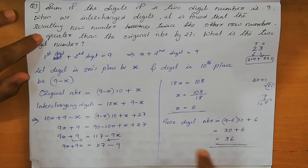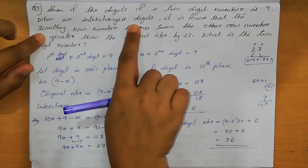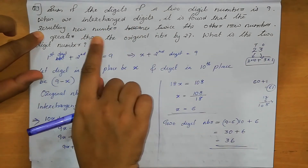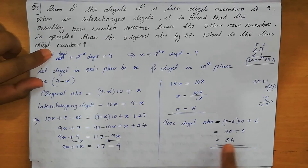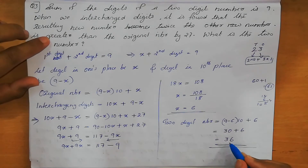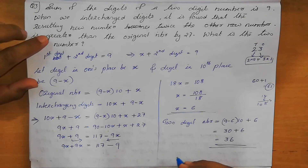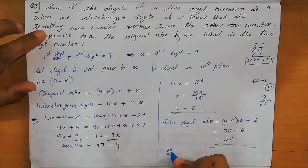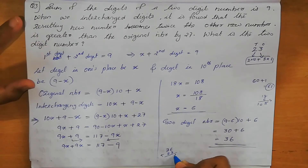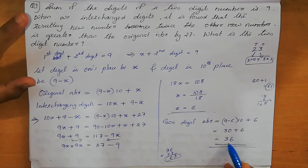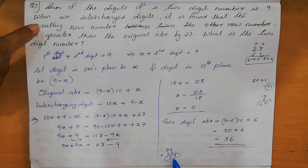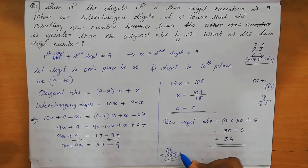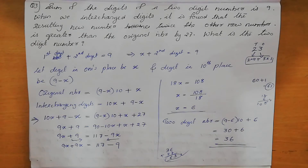We can verify: when we interchange the digits, the resulting new number is greater than the original by 27. Interchanging digits of 36 gives 63. Original number plus 27: 36 plus 27 is 63. LHS equals RHS. Our answer is correct.